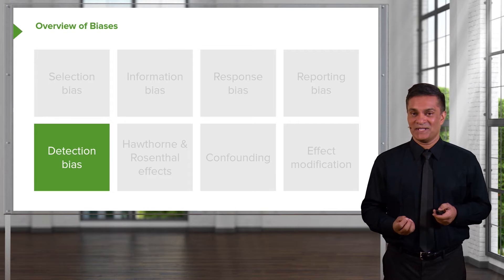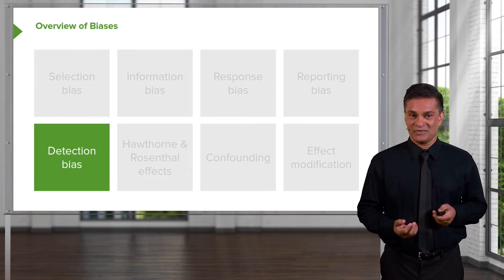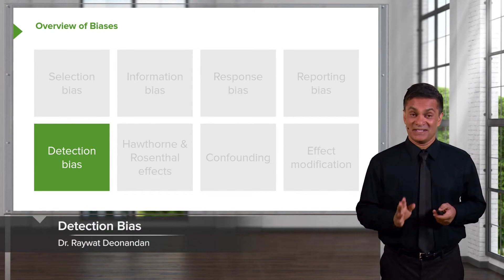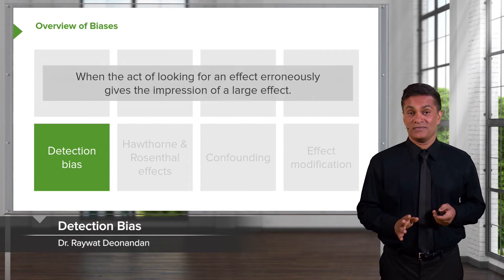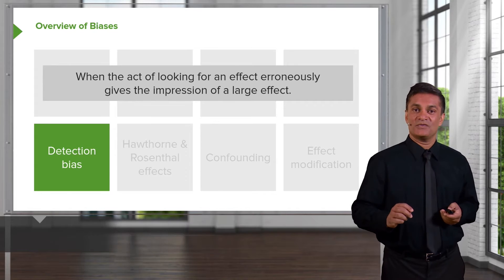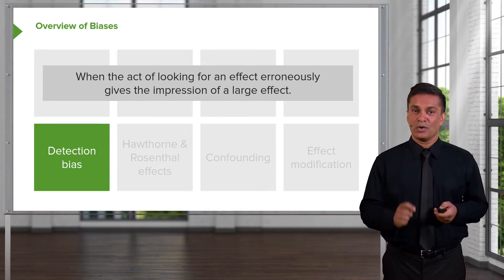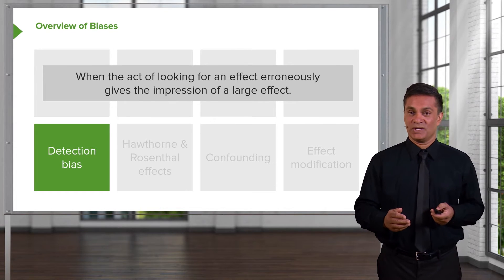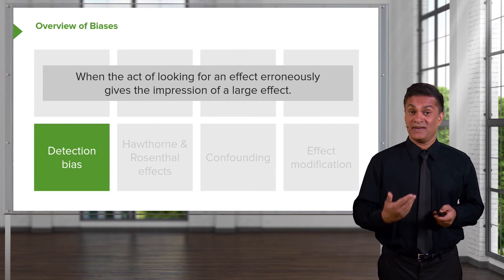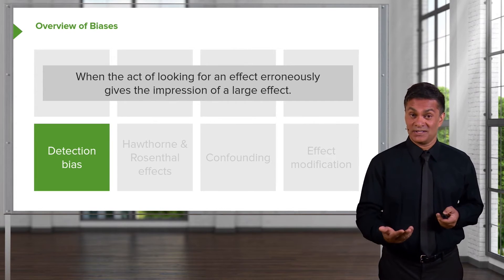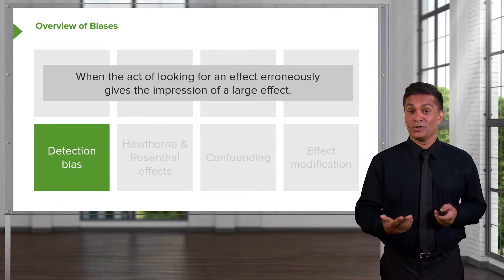The next kind of bias is my personal favorite: detection bias. Detection bias results a lot in surveillance studies. This is when the act of looking for an effect erroneously gives you the impression that an effect actually exists, or that it's larger than it actually is.